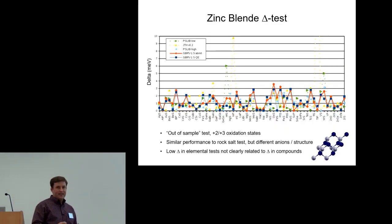I also extended the delta test formalism to work with a zinc blend testing set. This was new all electron data which covers a similar chemical space to the rock salt testing data, but with a different mix of anions, cations, and of course a different crystal structure. We can see delta values are mostly less than 2 meV, which is typically good enough for most calculations.